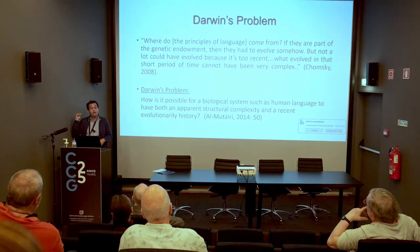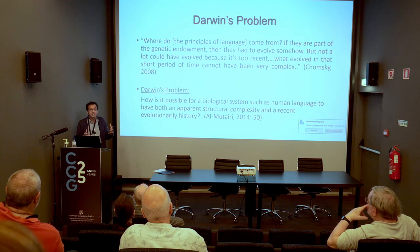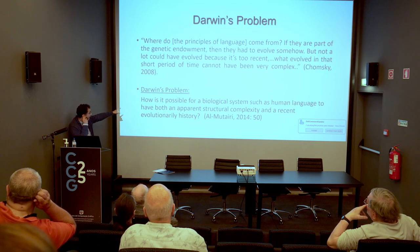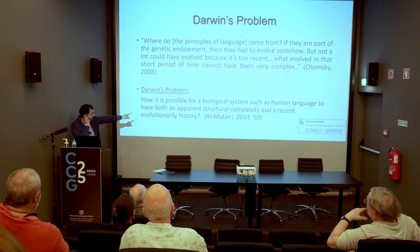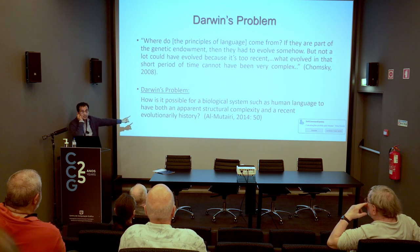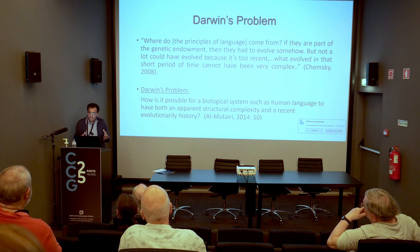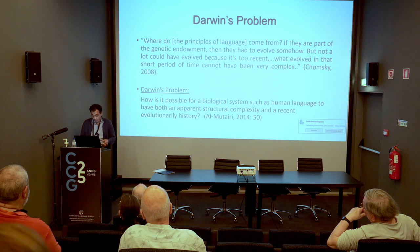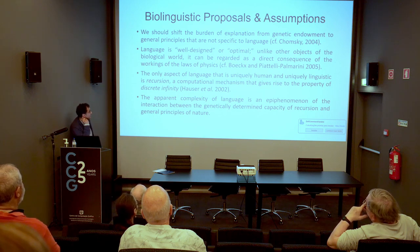So what evolved in that short period of time cannot have been very complex. This creates a tension: language acquisition seems to require something complex, but language evolution says it shouldn't be. I formulated this in 2014 as: how is it possible for a biological system such as human language to have both an apparent structural complexity and a recent evolutionary history? We have a problem, and we have to account for this complexity — only with proposals and assumptions.